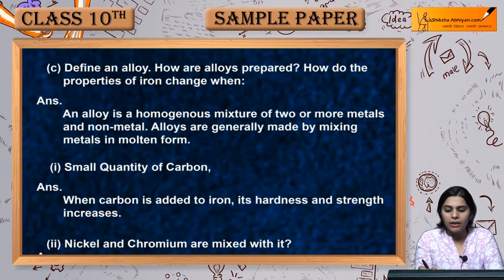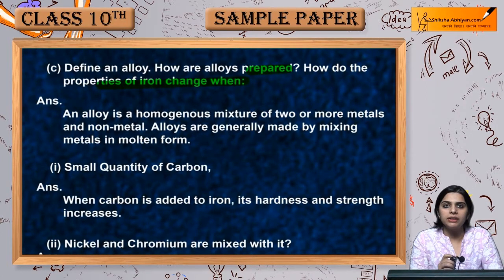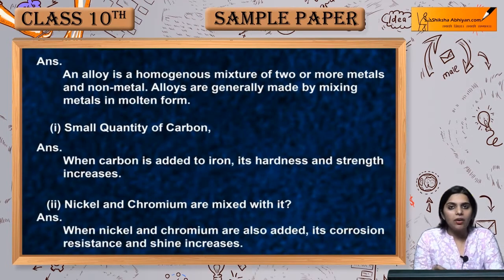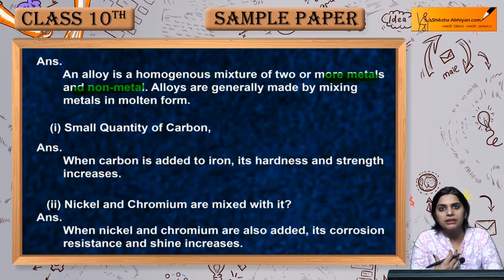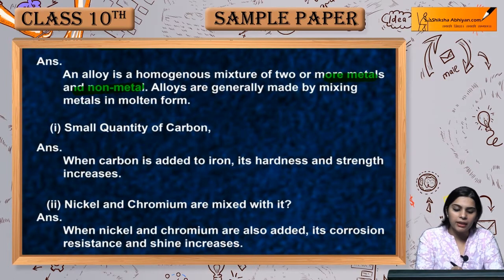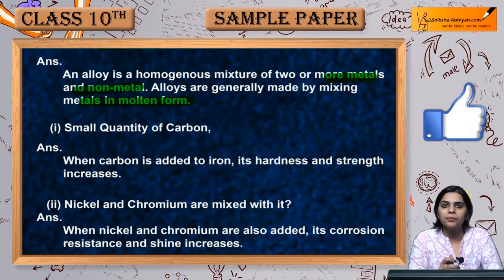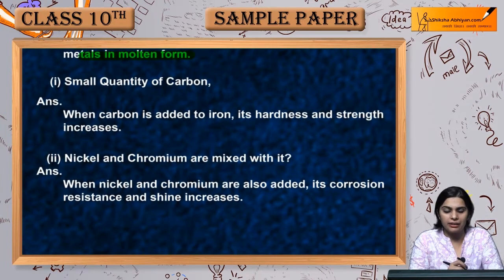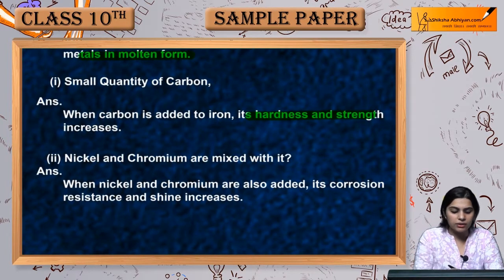Define an alloy, how are alloys prepared, and how do the properties of iron change? Alloys are generally made by mixing metals in molten form — when metals are in molten form, it becomes easy to mix them. If we add a little carbon to iron, its hardness and strength increases.